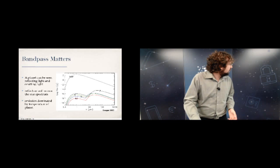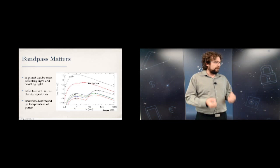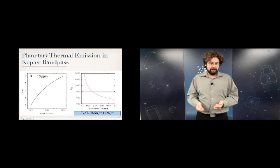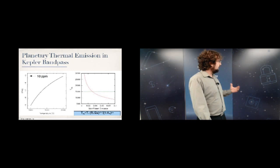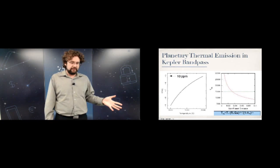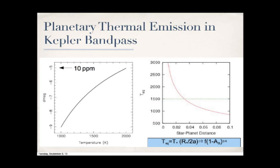I can estimate what fluxes I observe in the Kepler bandpass depending on planet temperature. Changing temperature from 1,000 to 2,000 Kelvin and assuming black bodies, how much thermal flux leaks into the Kepler bandpass for a Jupiter-sized planet? At 2,000 Kelvin, we're getting about 10 parts per million or more — potentially significantly more depending on stellar and planet spectra modeling. Once within about 0.021 AU, we get above around 1,500 Kelvin — the regime where you can actually detect emitted flux.